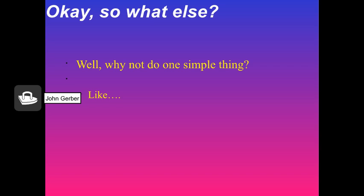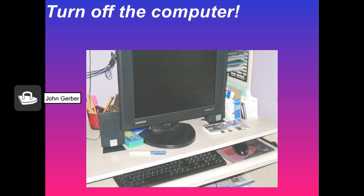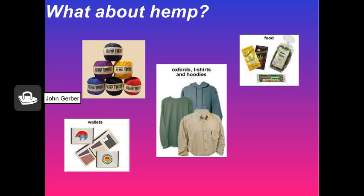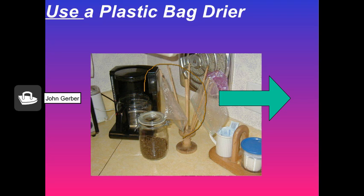Kingsolver tells us to start small — do simple things step by step. Just start. Start simple by changing a light bulb. Compact fluorescents or LEDs today can replace all the incandescent bulbs you have. Power down your computer before you go to bed. Make sure your coffee is certified fair trade, so you know that local farmers had a fair deal and weren't exploited. Hemp clothing uses far less pesticide than cotton.